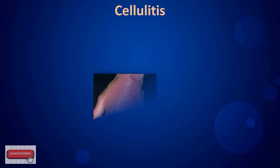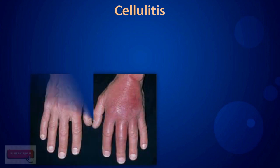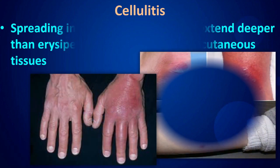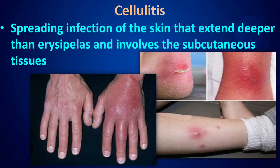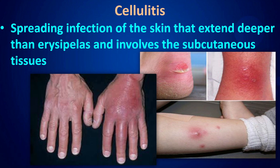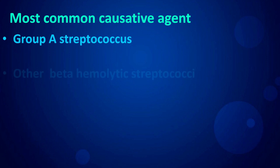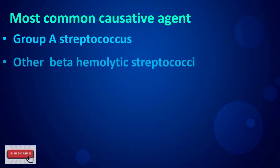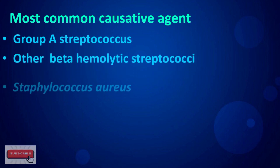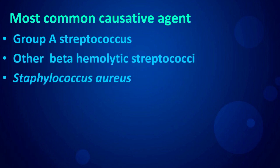Cellulitis is a spreading infection of the skin that extends deeper than erysipelas and involves the subcutaneous tissues. The most common causative agents are Group A Streptococcus, other beta-hemolytic streptococci, and Staphylococcus aureus.